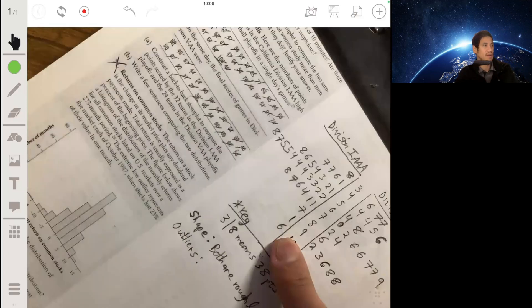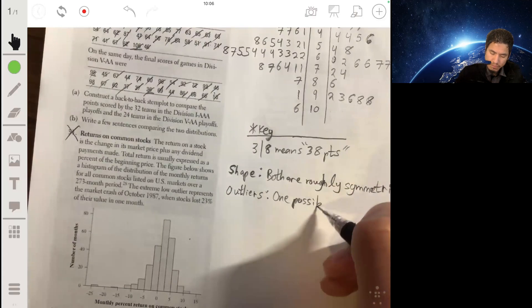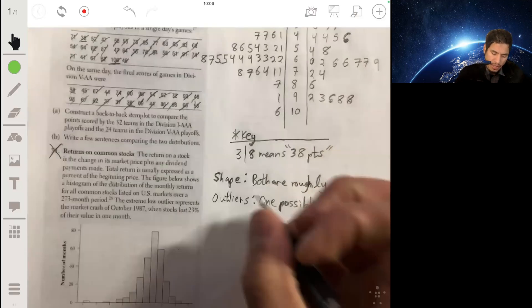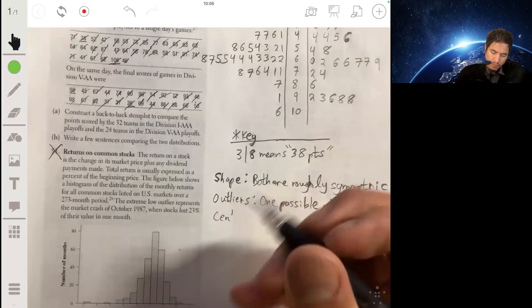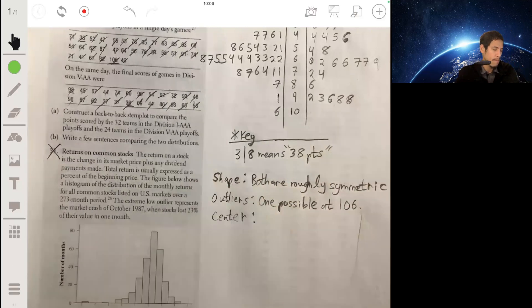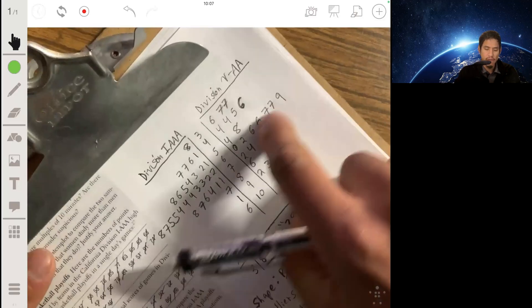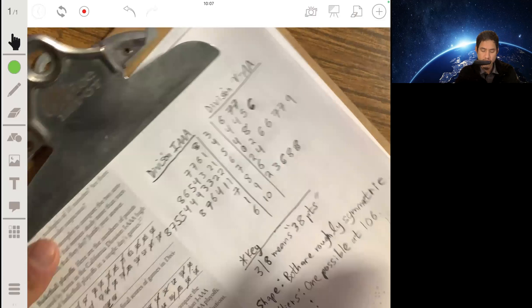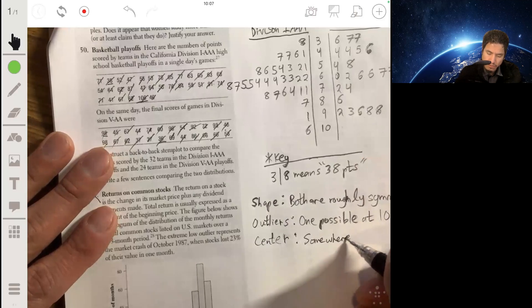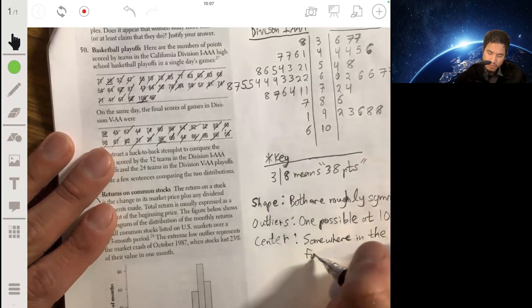Any outliers? Maybe say this is an outlier, maybe one possible at 106. Center: for this one you could probably say it's somewhere in the 60s, so probably both of them somewhere in the 60s for both.